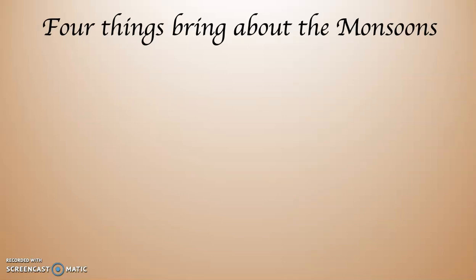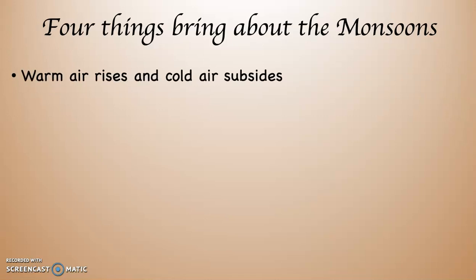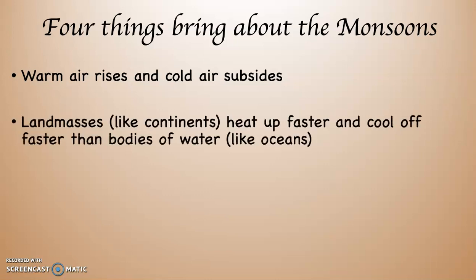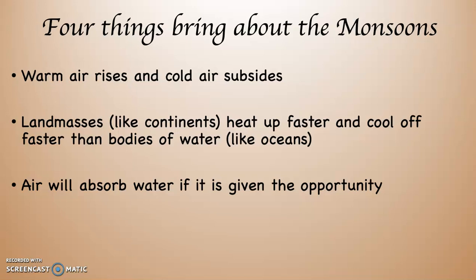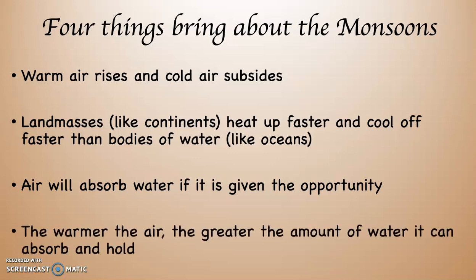In addition to these alternating pressure systems, four things bring about the monsoons in Asia. First: warm air rises and cold air subsides. Warm rising air creates low pressure, and cold subsiding air creates high pressure. Second: land masses — a continent — heat up faster and cool off faster than water bodies like an ocean. Third: air will absorb water if given the opportunity. The atmosphere is something like a sponge — if you set a dry sponge in a pan of water, it absorbs water; the atmosphere works the same way. And the warmer the air, the greater the amount of water it can hold and absorb.